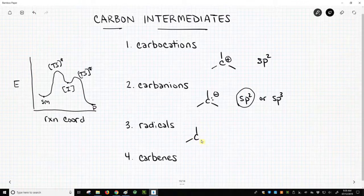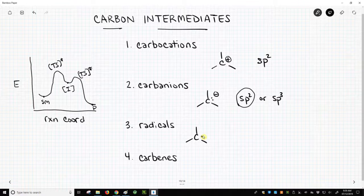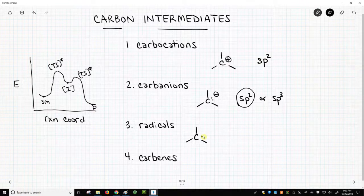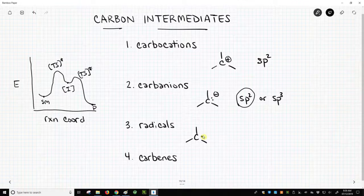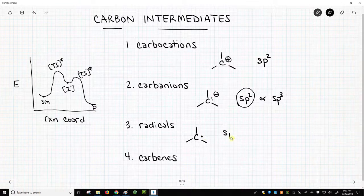Radicals are carbons with three bonds with an unpaired electron. Therefore, while that carbon still does not have a full octet, it also does not have a formal charge. Radicals are most commonly sp2 hybridized.